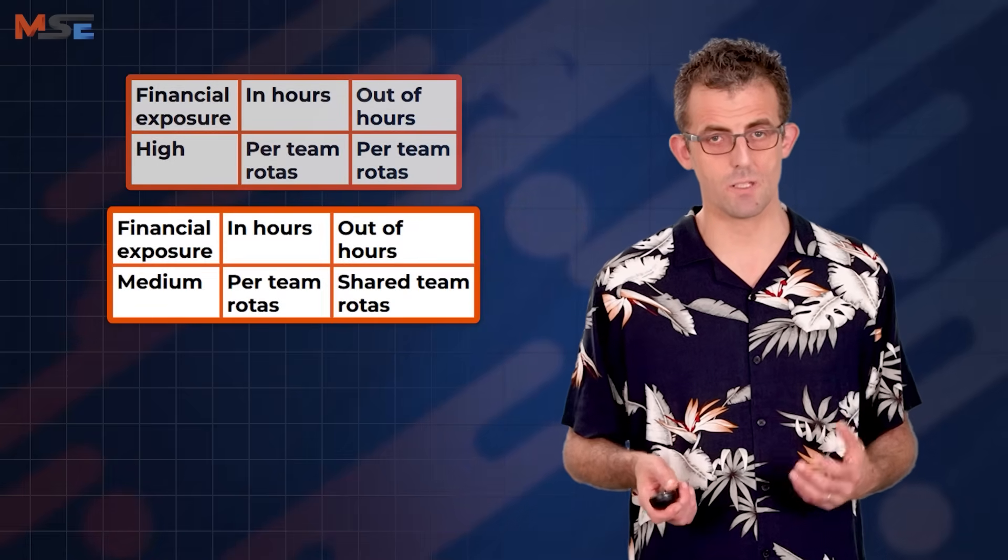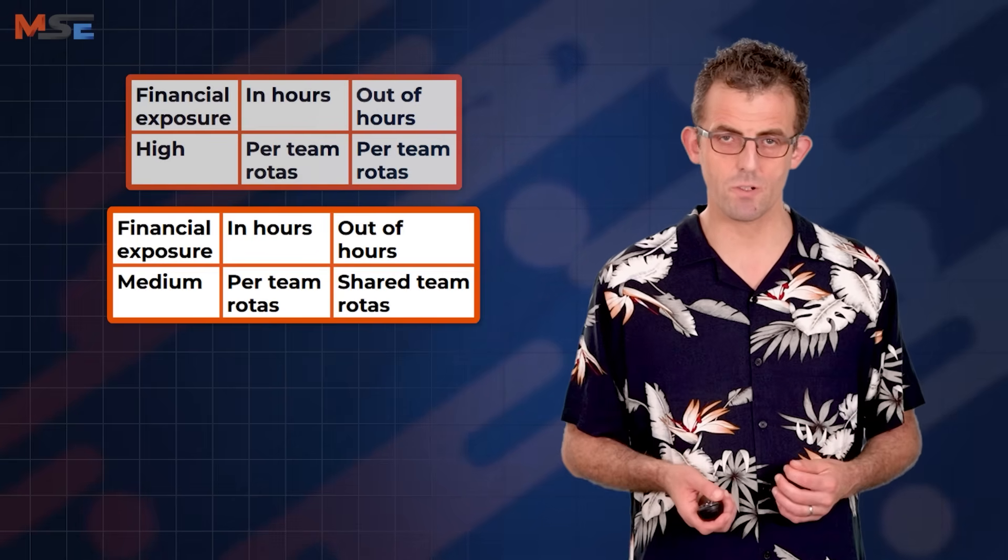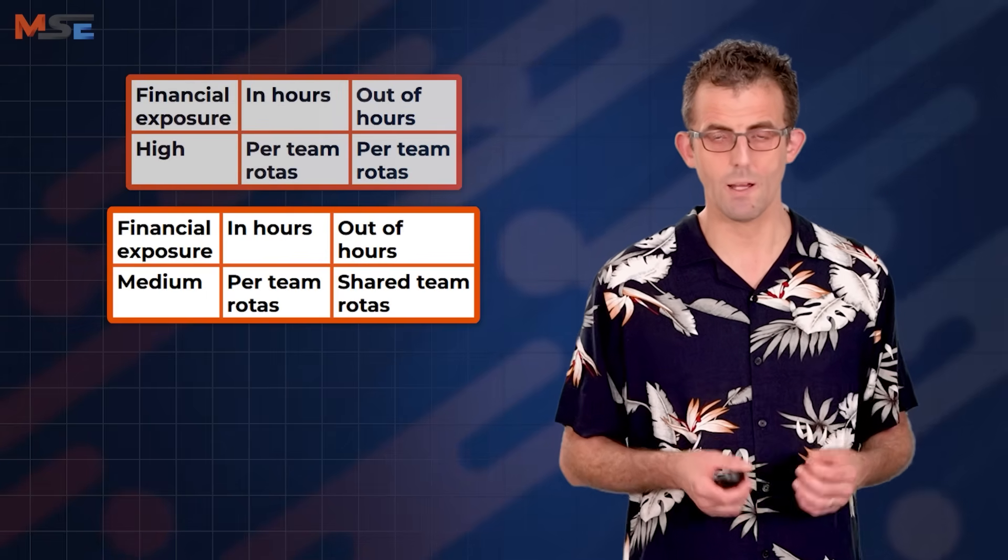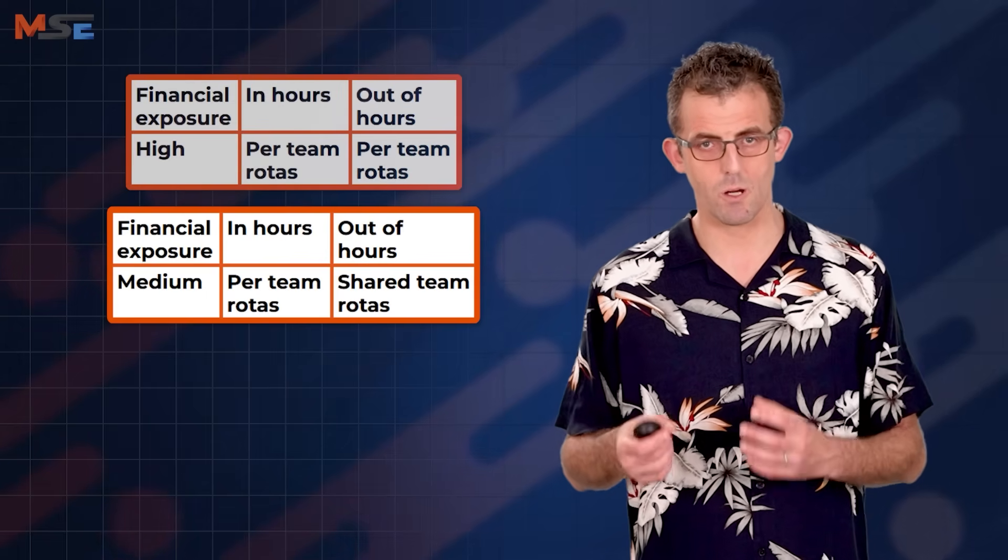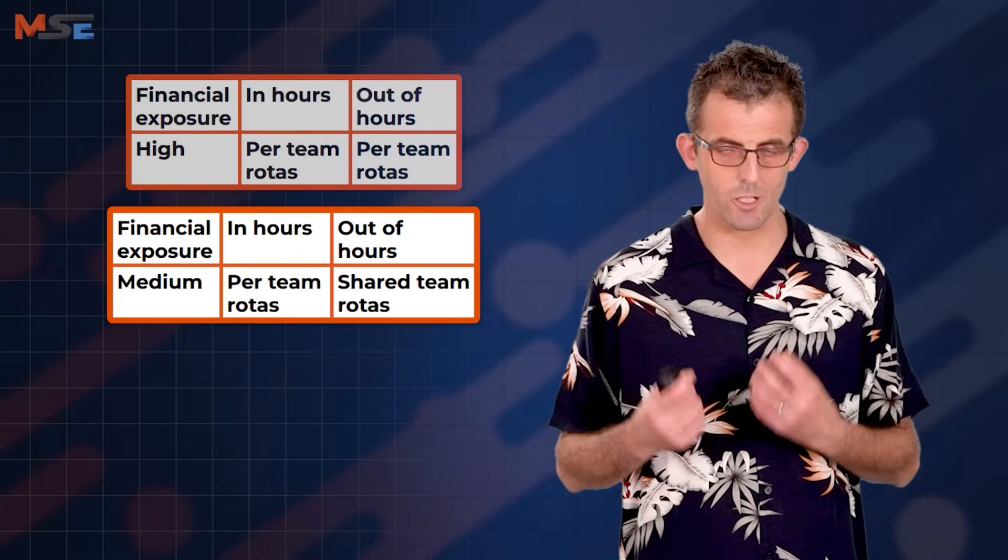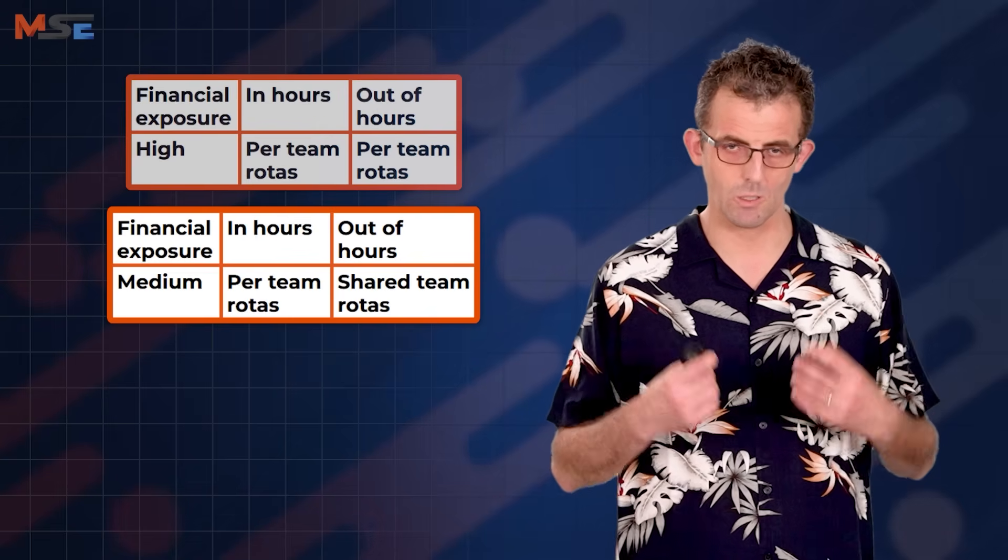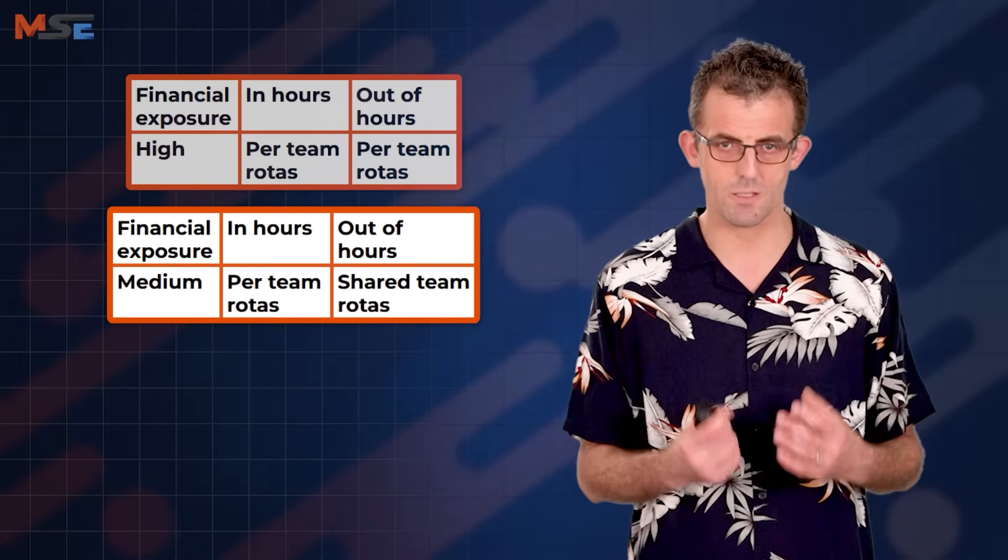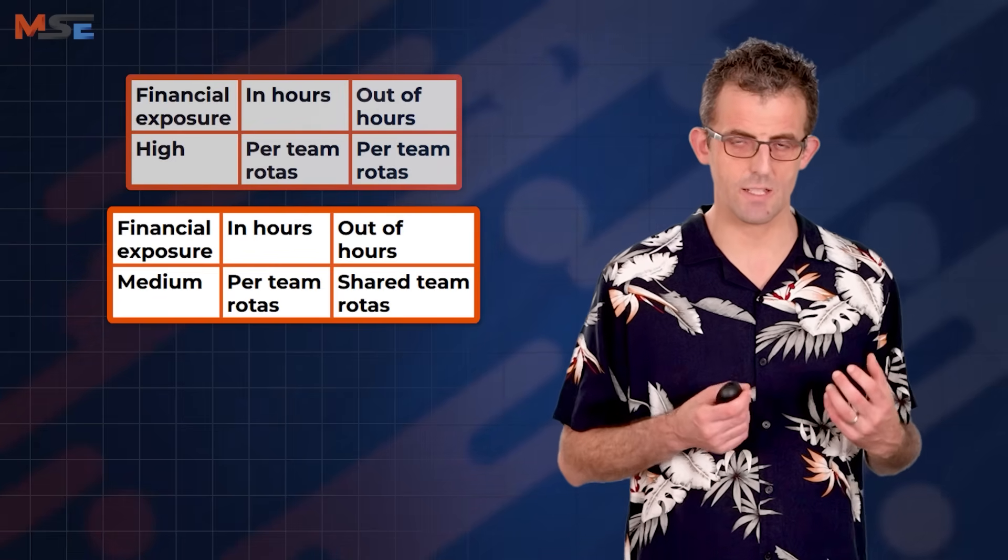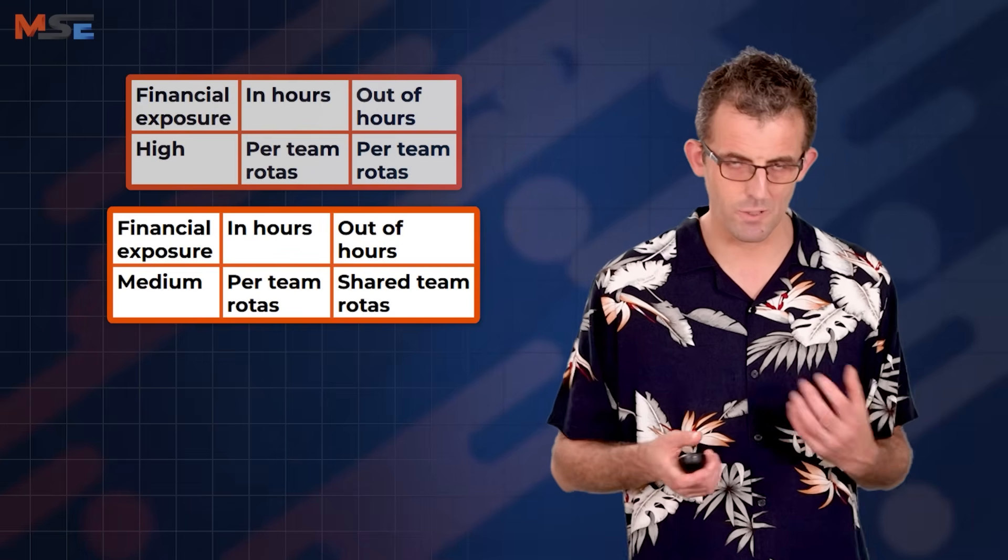You'll have a majority of services with a medium level of financial exposure, like a fair bit of revenue flowing through them. And in that case, I recommend in hours you have a dedicated engineer on-call, and out of hours you share rotors between teams operating in the same business domain. I urge you to use business domains to share on-call rotors, not technology stacks, because it will lower cognitive load and drive better decision-making around product capabilities and technology architecture. This is a really effective way to minimize knowledge synchronization costs and balance it with your run cost.